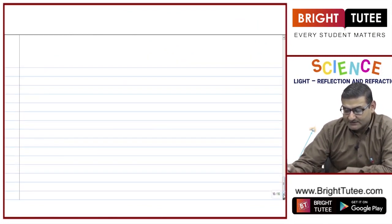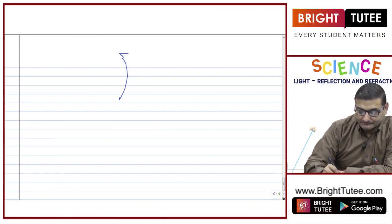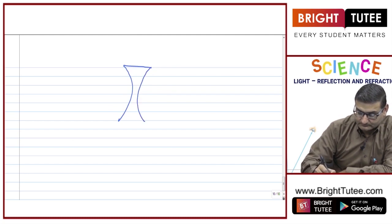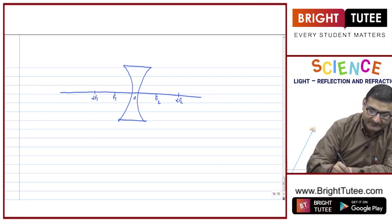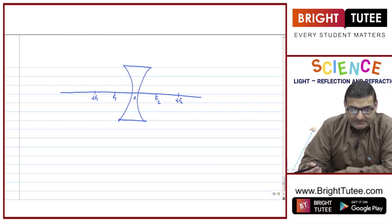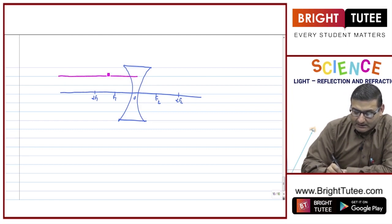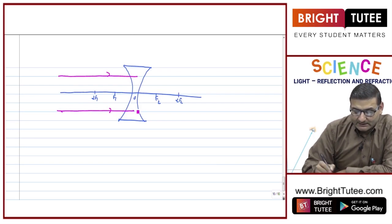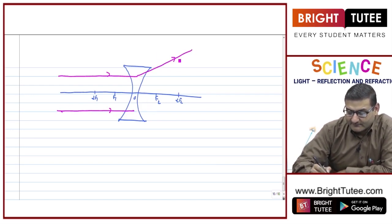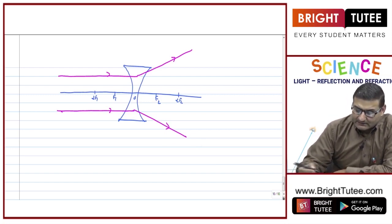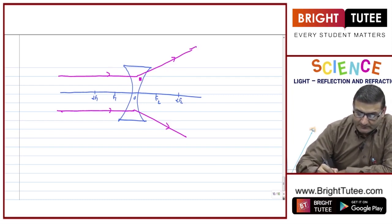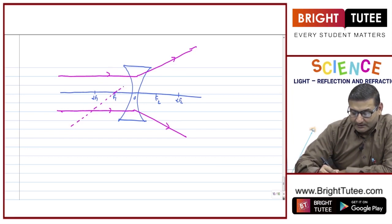For the second case, when the object is placed at infinity, we draw a fresh diagram with the concave lens, principal axis, optical center, f2, twice f2, f1, and twice f1. Since the object is at infinity we show the light rays coming parallel to the principal axis. After refraction, these rays diverge away from the principal axis and will not meet in front of the lens, so we extend them backward because they appear to pass from the focus.